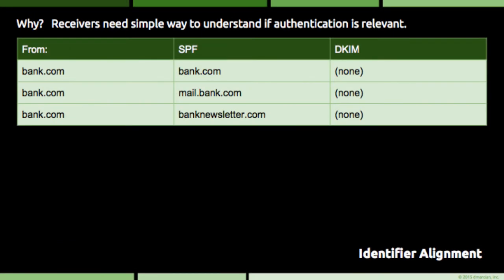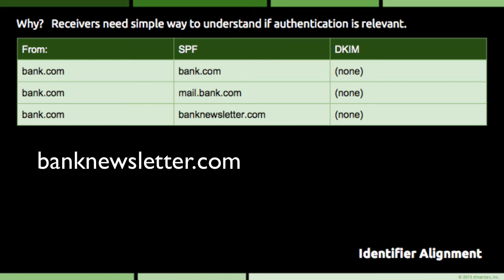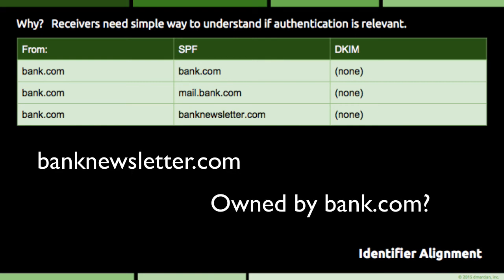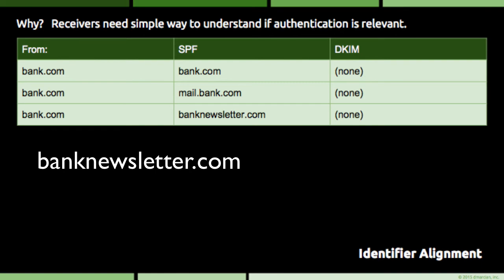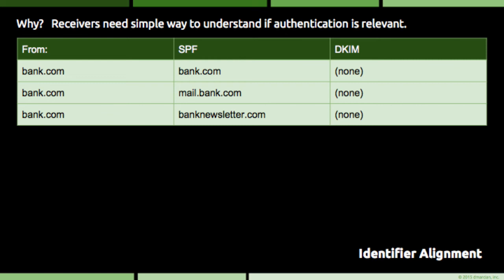This third example shows something interesting. Instead of SPF yielding bank.com or a subdomain of bank.com, the authenticated identifier is banknewsletter.com. For all we know, banknewsletter.com could be owned by the same entity that owns bank.com, or it could be owned by criminals trying to appear legitimate. There is simply no reliable way to maintain and communicate such associations between domains — either by senders creating databases or receivers maintaining their own. Both approaches would be fraught with inaccuracies and would subvert the utility of DMARC. So this email is not compliant with DMARC.